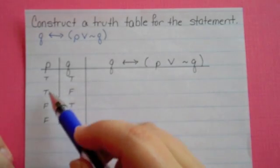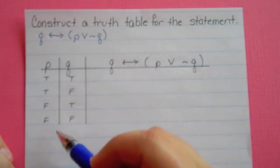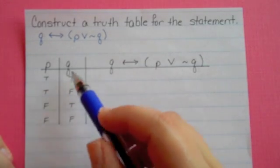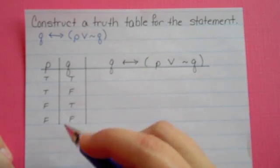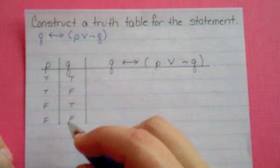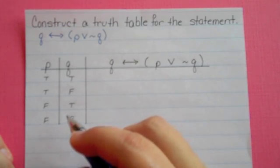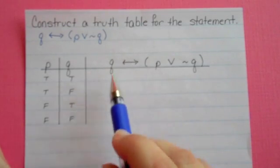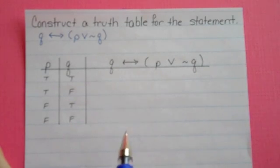Under P, two trues followed by two falses, and under Q, you alternate true, false. The way I do truth tables is just write down the truth values underneath each one of my parts and then work it out.